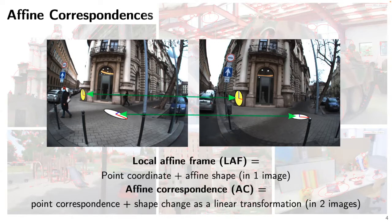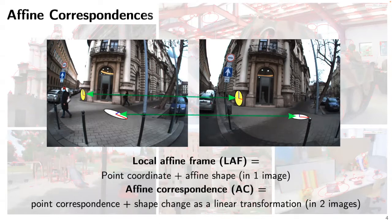To establish pixel correspondences you need some descriptor. When you detect SIFT, you have a region which is just a circle around the keypoint, and you assume 'up is up' for orientation. You have the center point and an oriented circle with radius - this is a proto-affine feature. If you have a circle here and then a circle on a slanted surface, it would correspond to an ellipse - and correspondence between an ellipse and a circle is an affine correspondence.